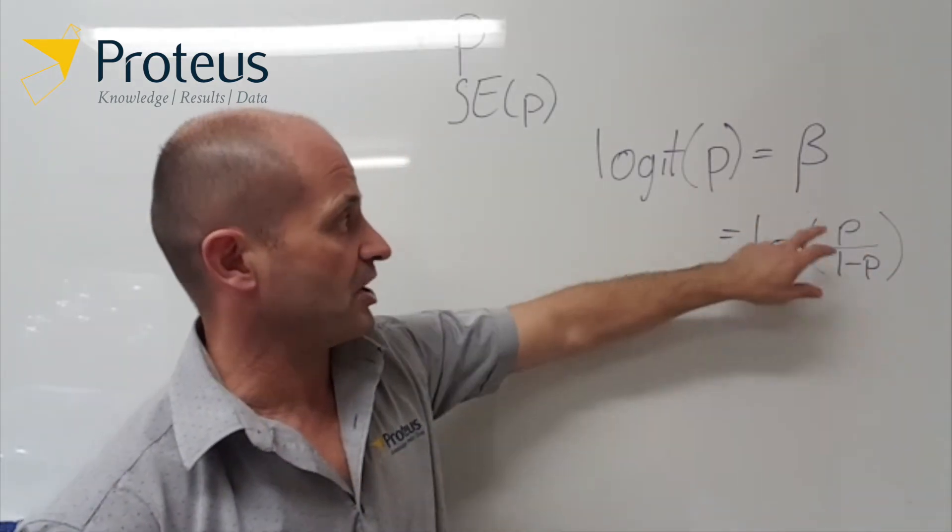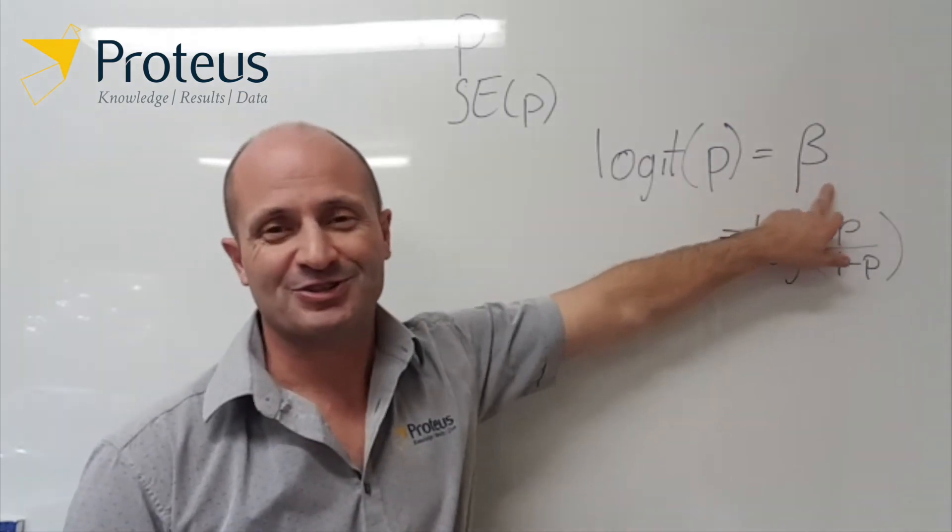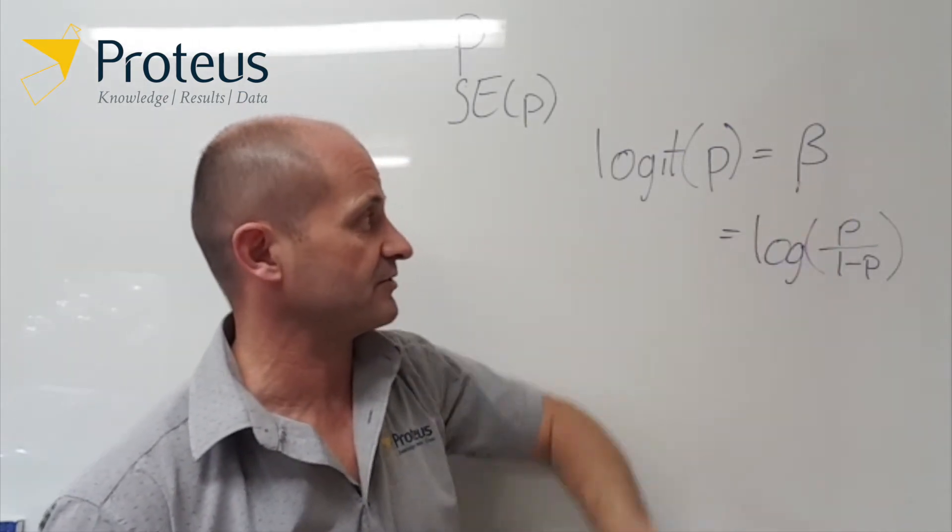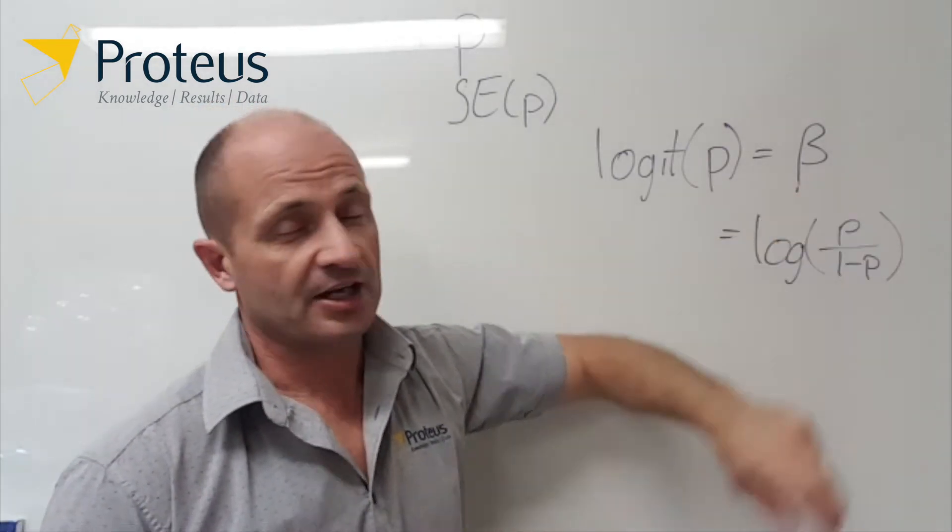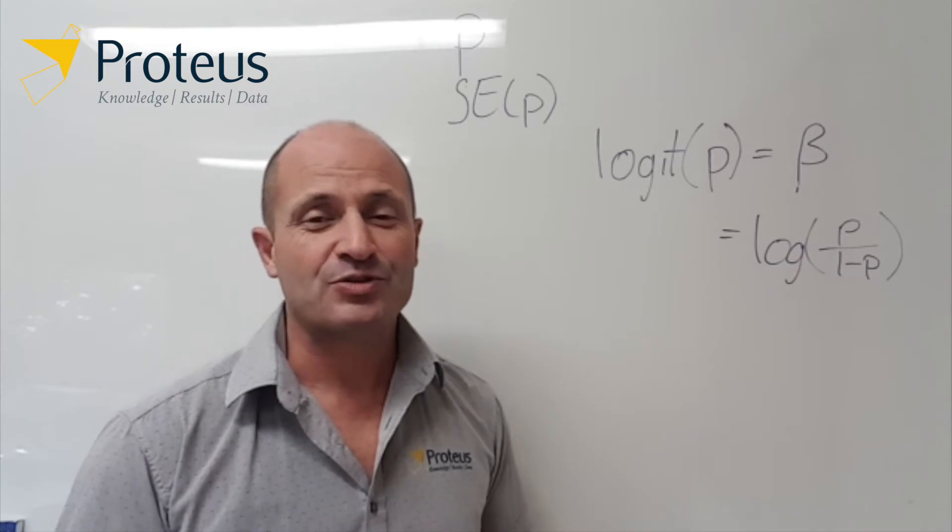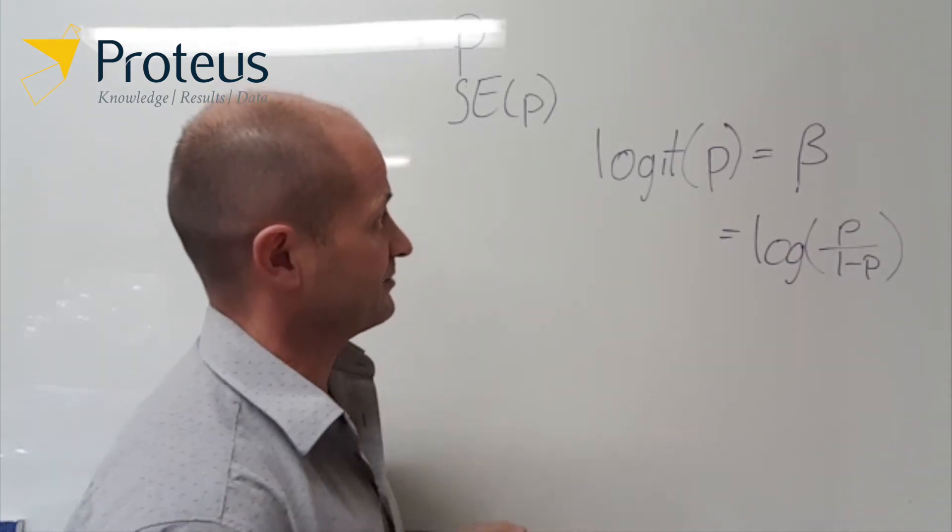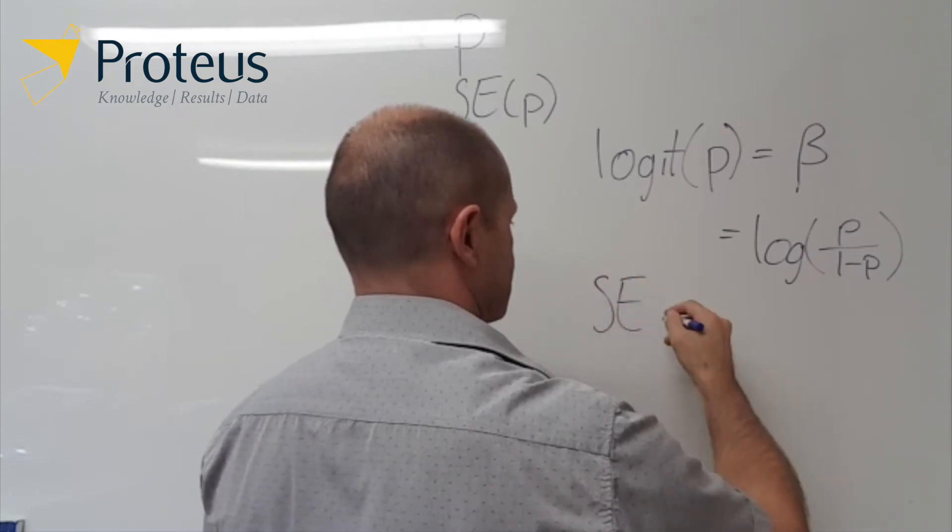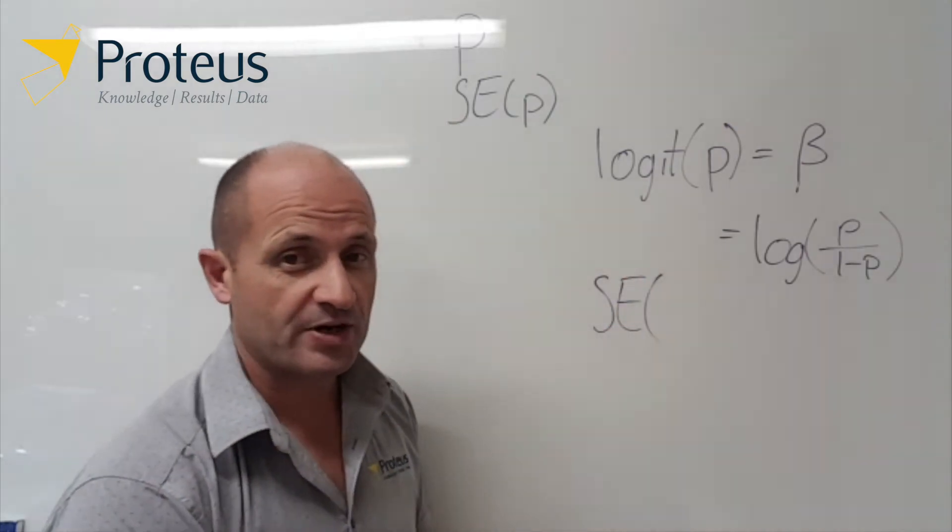Now, what if I want to know what the standard error for beta is? So I figured out what beta is, I can just do that fairly straightforward. How do I calculate the standard error for beta? Again, we can use the delta method, and it sounds pretty complicated in theory, but in practice, it's actually fairly straightforward.